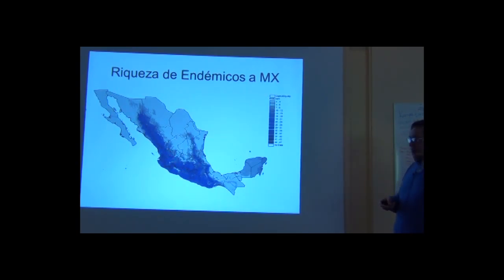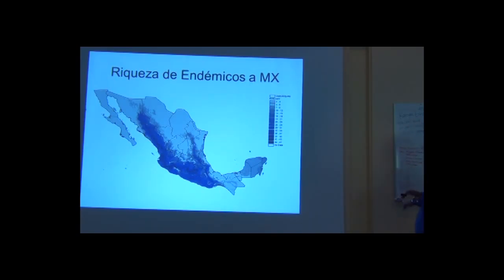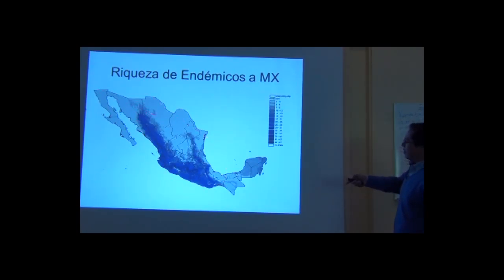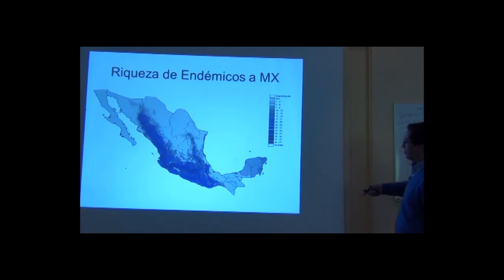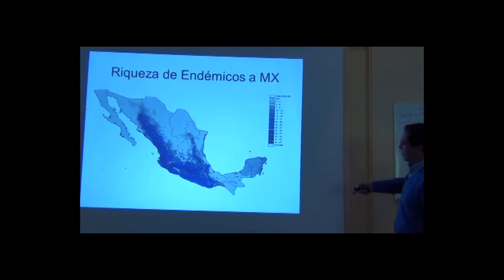We pulled out only the subset of maps classified as endemics. The endemism is concentrated away from the borders with other countries, and is concentrated in the lowlands of the Pacific coast and the mountains.